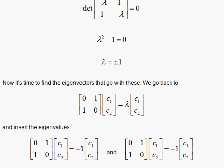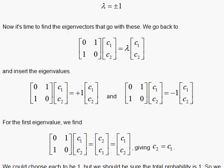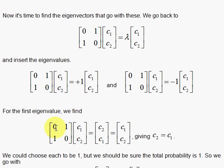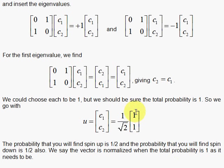To find the eigenvectors, I set up my eigenvector problem and explicitly replace the lambda with plus 1 and minus 1 and work it out. For the first eigenvector, the plus 1 case, I have 0 times C1 plus 1 times C2 is C2. And 1 times C1 plus 0 times C2 is C1. That must equal the same thing back with the plus 1 eigenvalue, which means the C's are equal. C1 equals C2. So I can find a solution, 1, 1, 1 over square root of 2 in front so that I get the probability to be 1 half for spin up and 1 half for spin down.